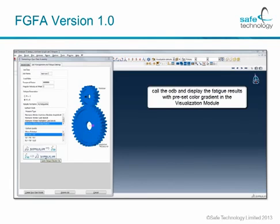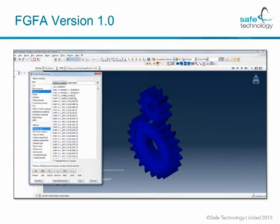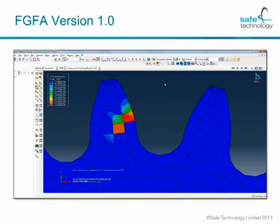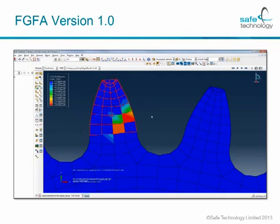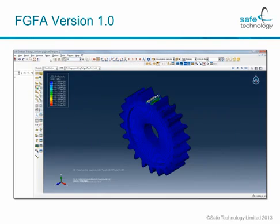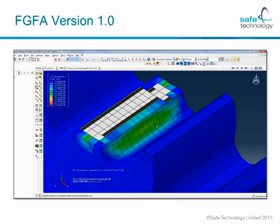Once the fatigue analysis has been conducted, it is time to look at the results — this is the exciting bit. You call the ODB and display the fatigue results with a preset color gradient in the visualization module, specifically because for fatigue you need to look at the results in reverse color order. We will now zoom in on an area and look at the fatigue life prediction of the root elements. The impressive item to highlight is that in spite of a very coarse mesh, we are able to locate the crack initiation point exactly where it should be along the face width of the gear.